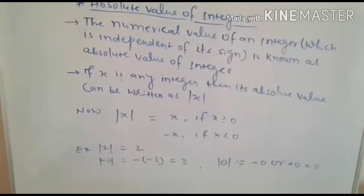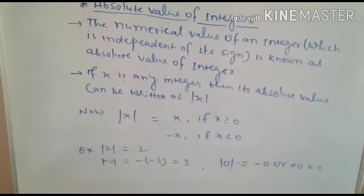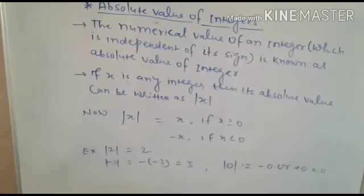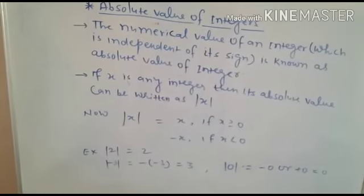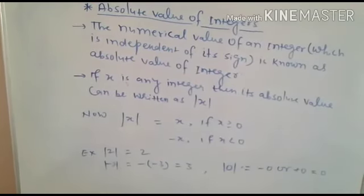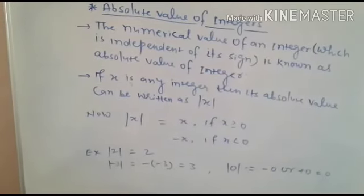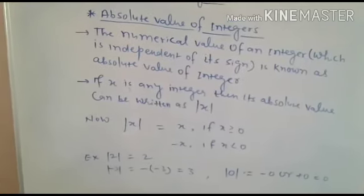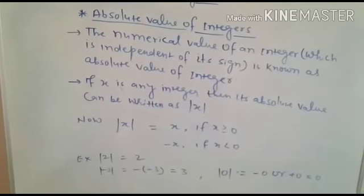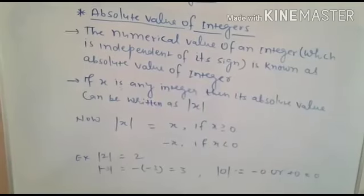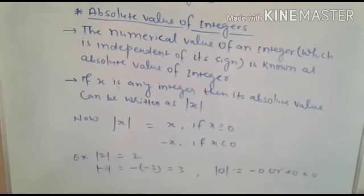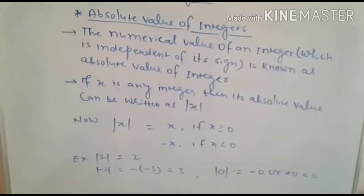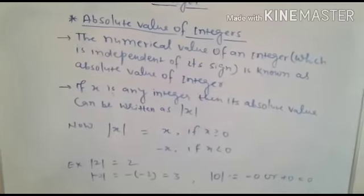It means minus 3 is negative, which is less than zero, so its absolute value is 3. And what about the absolute value of zero? If you write minus zero or plus zero, that will be zero. As we know, minus zero or plus zero is equivalent to zero, so the absolute value of zero is zero.